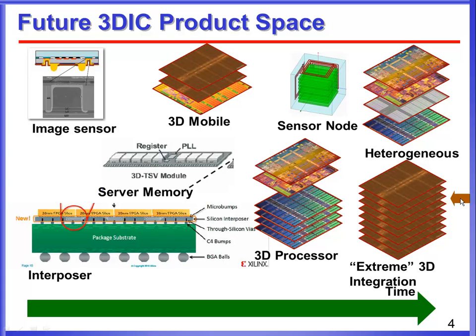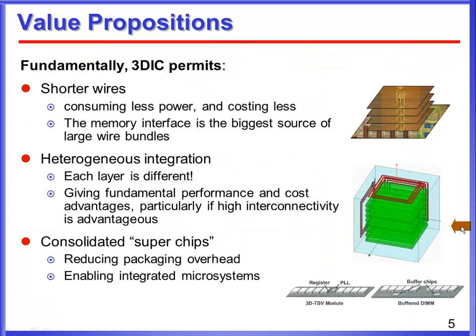In this talk I'll mainly be focusing on the logic aspects related to 3D processors. Fundamentally, 3D gives you shorter wires, which can consume less power and cost less. The particular big opportunity is the memory interface. 3D also gives you heterogeneous integration, where each layer can be customized to a particular application. And finally, 3D gives you the opportunity to build consolidated superchips — for example, stacked DRAM chips or interposers such as Xilinx produces — where you get an effective silicon area that's highly interconnected at a lower cost than monolithic silicon.